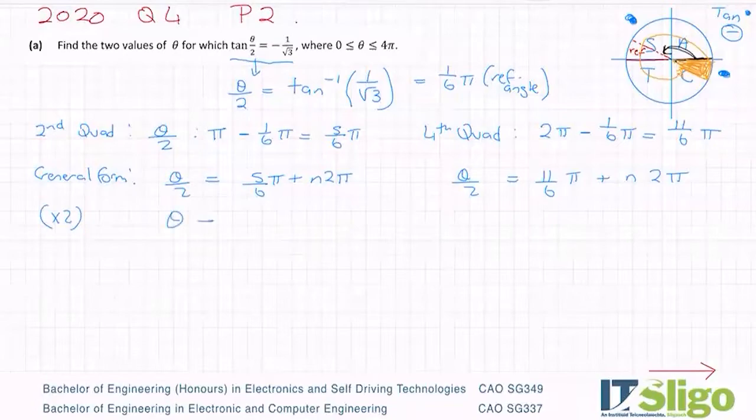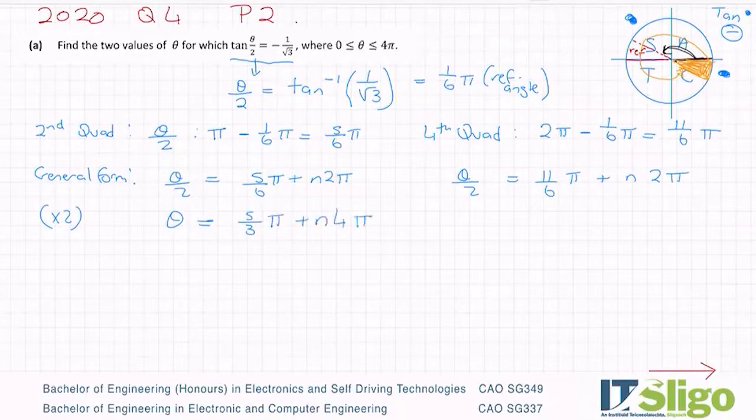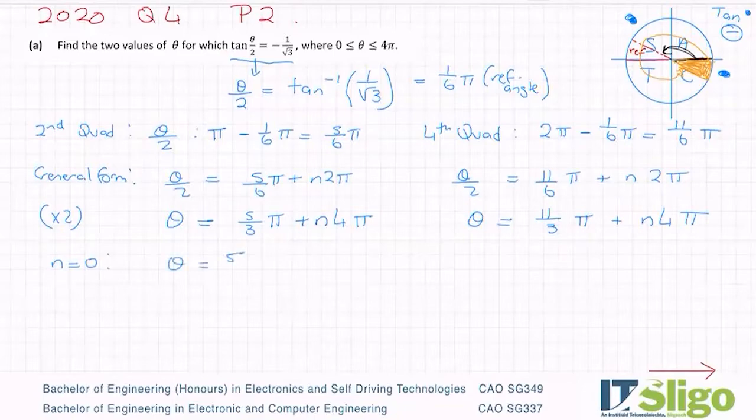So I need to multiply across by 2 in this case. That's the bit that's a little bit different. So 5/6 multiply by 2 is 10/6, which is 5/3π, and multiply your general angle to get n·4π. Or here, θ equals 22/6, which is the same as 11/3π plus n·4π. I'm looking up again here to see how many rotations I have. I only have one. So n equals zero. So θ equals 5/3π and θ equals 11/3π.